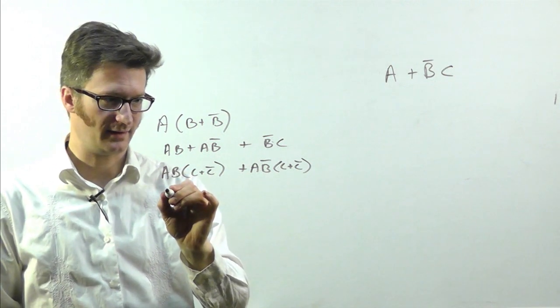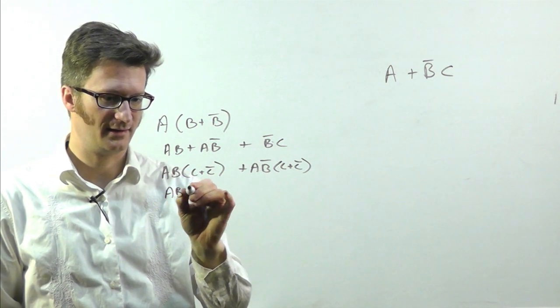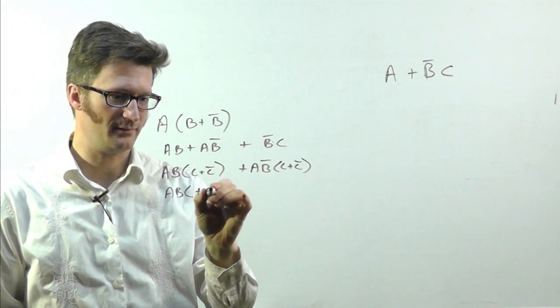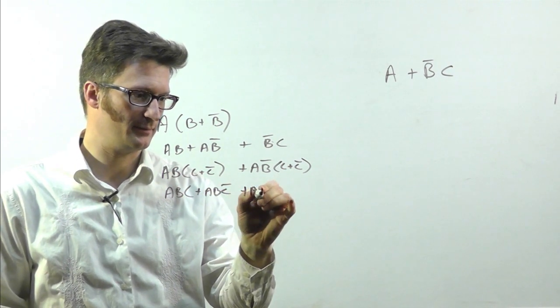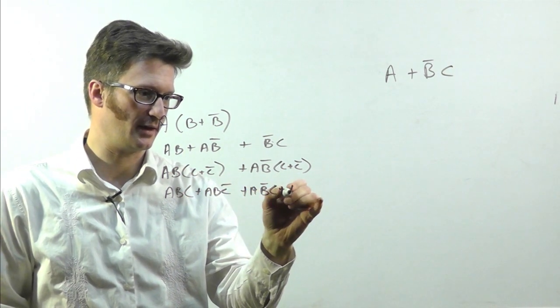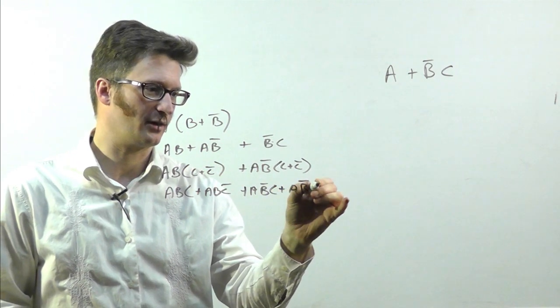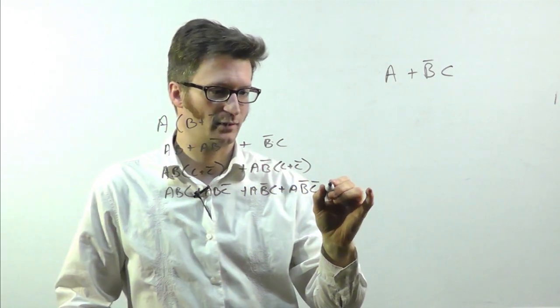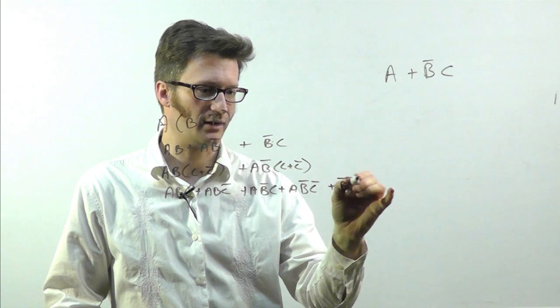So now I get A, B, C, or A, B, C bar, or A, B bar, C, or A, B bar, C, or B bar, C.